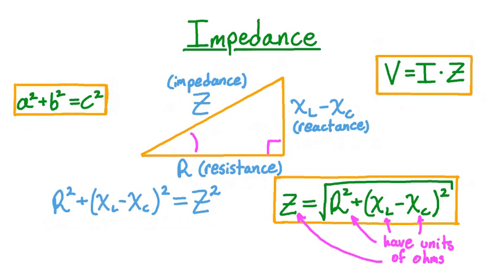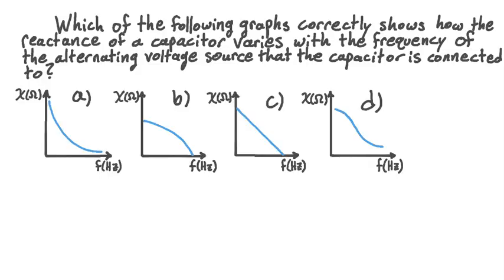Now that we've seen how reactance and impedance generalize the concept of resistance, let's work through an example. Which of the following graphs correctly shows how the reactance of a capacitor varies with the frequency of the alternating voltage source that the capacitor is connected to? For our answer choices, we have four different graphs. Each graph has frequency in hertz on the horizontal axis and reactance in ohms on the vertical axis. The blue curve on each graph shows a possible way that reactance might change with frequency.